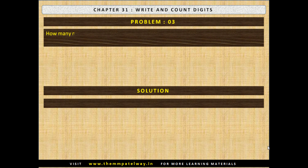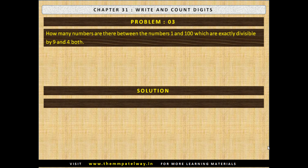Problem No. 3: How many numbers are there between 1 and 100 which are exactly divisible by both 9 and 4? Now stop the video and find the solution. The solution follows: there are 2 such numbers — 36 and 72.